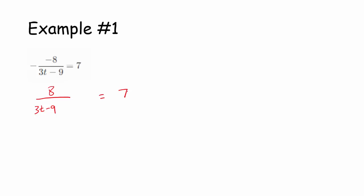Like over here on the right-hand side is just the number 7. You can think of that as 7 over 1. So that's nice. I don't want anything in the denominator other than 1. So over here on the left-hand side, we have 3t minus 9 in the denominator. So I'm going to multiply both sides of the equation by 3t minus 9.